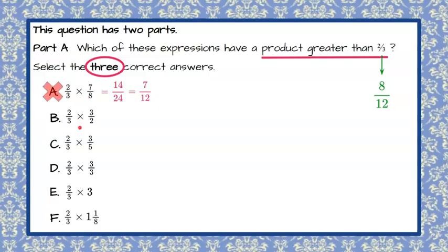Now let's look at B. 2 times 3 is 6, and 3 times 2 is 6. So this is equivalent to 6 over 6, which simplifies to 1. Any number divided by itself is 1. 1 is greater than 2-thirds because this is one whole and this is two parts of 3. So the product is greater than 2-thirds. 1 is greater than 2-thirds, so there's our first answer choice that's correct.